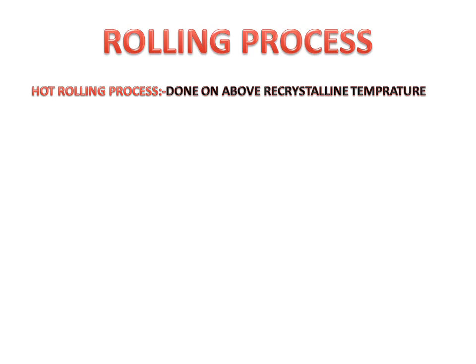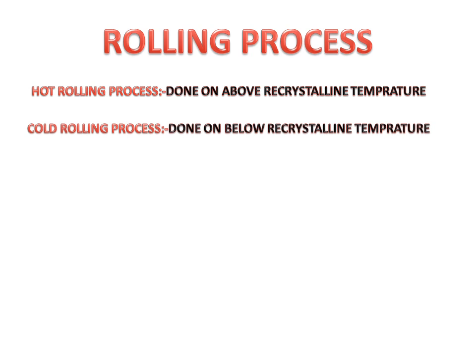Today we will discuss the rolling process, how it works, and what are the types of rolling processes. Rolling processes are of two types: hot rolling process, which is done above the recrystallization temperature, and cold rolling process, which is done below the recrystallization temperature.